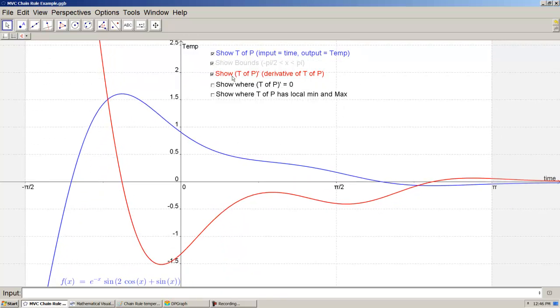And I want to know, where is this red function? Where is this derivative of t of p? Where is it equal to 0? Well, here are those points. At t is negative 0.59, and t is positive 2.55.